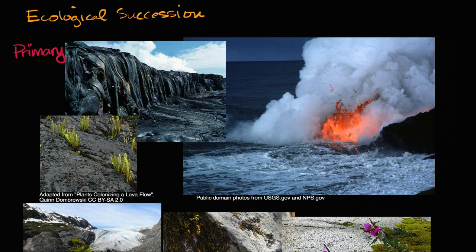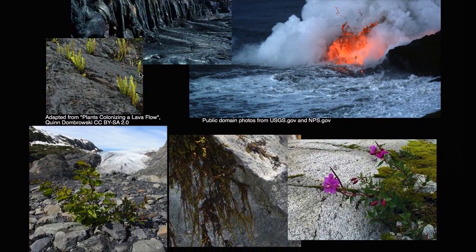That new land doesn't just form from lava flows. There are other examples of new habitats forming. Right here we have pictures of a new habitat forming because of the retreat of glaciers. When the glaciers were covering up these rocks, you didn't have life on them. But as the glacier retreats, you see things like mosses and other pioneer species starting to colonize, and over time they make it more suitable for other types of species.